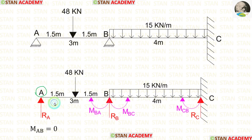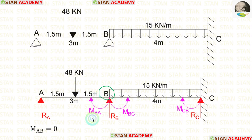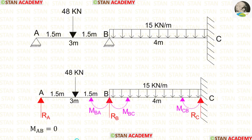At point A, there will be no moment because it is a simply supported end, so MAB is equal to 0. At joint B, we have to find two moments: MBA and MBC. At point C, there is a fixed support, so there will be a moment MCB. In total, we have to find three moments — MBA, MBC, and MCB — and three vertical reactions RA, RB, and RC.